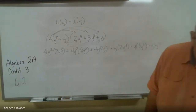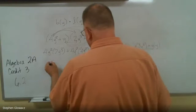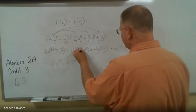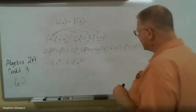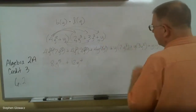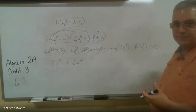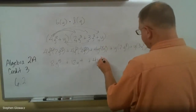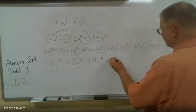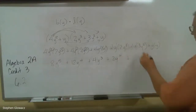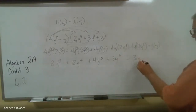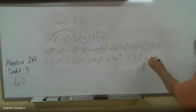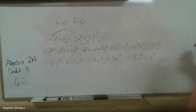Let's multiply these out. 4 times 2 is 8, and 2 plus 3 is 5, so 8y⁵. 4 times 3 is 12, and 2 plus 2 is 4, so 12y⁴. Putting in the ones: 4 times 1 is 4, and 2 plus 1 is 3, so 4y³. Then 1 times 2 is 2, and 1 plus 3 is 4, so 2y⁴. Then 1 times 3 is 3, and 1 plus 2 is 3, so 3y³. And finally all ones: 1 times 1 is 1, and 1 plus 1 is 2, so y².